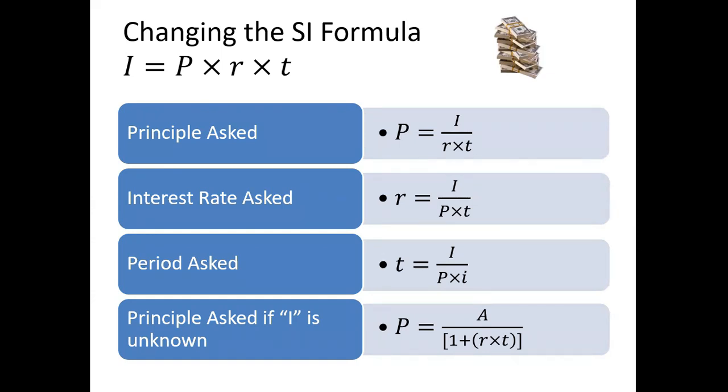And you know how to turn any of those into the subject of the formula. If we want P alone, we have to divide both sides with R times T. If we want R alone, we'll have to divide both sides with P times T. And if we want T alone, we are going to divide both sides with P times R. And here you can see I have done it like that.